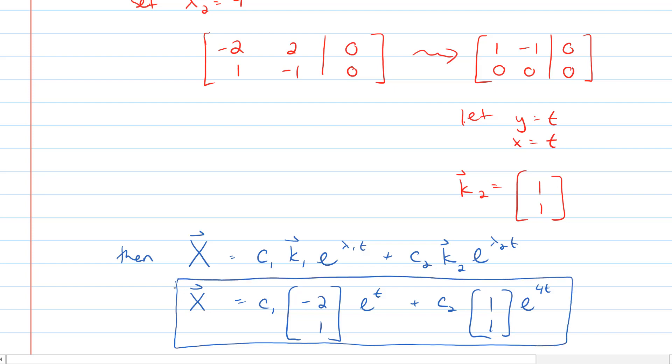If you wanted to check that, then you could differentiate it and multiply it by A, and then you could also take this and multiply it by A, and show that those two are equal to each other.